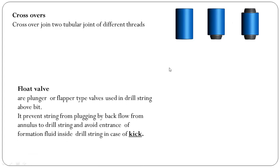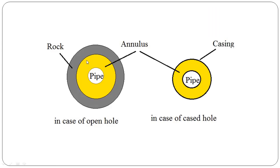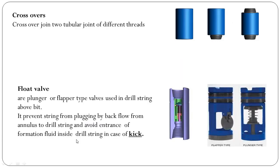A float valve — either plunger type or flapper type — is used in the drill string above the bit. It prevents the string from plugging by backflow from the annulus into the drill string, and avoids entrance of formation fluid inside the drill string in case of a kick. The annulus is the space between the drill string and open hole, or between the casing and drill string. These float valves are fitted inside a float sub.